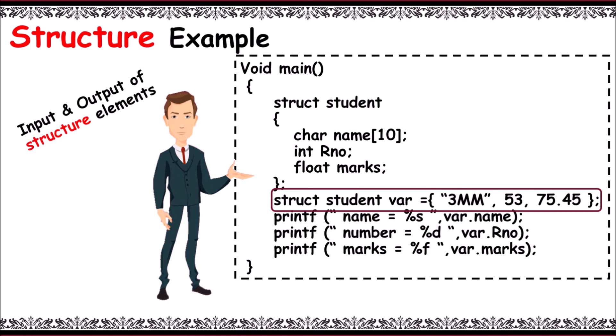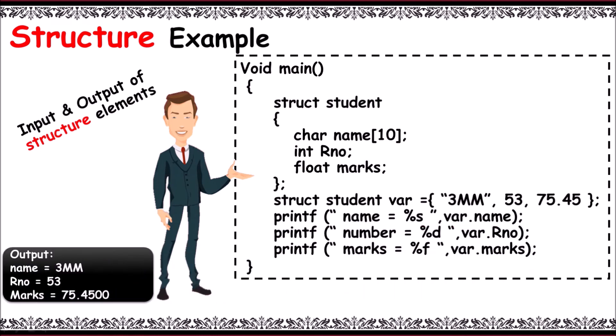Next, printing with var.name for name, var.rno for number, and var.marks for marks. You can observe the output: 3MM, 53, and 75.45.